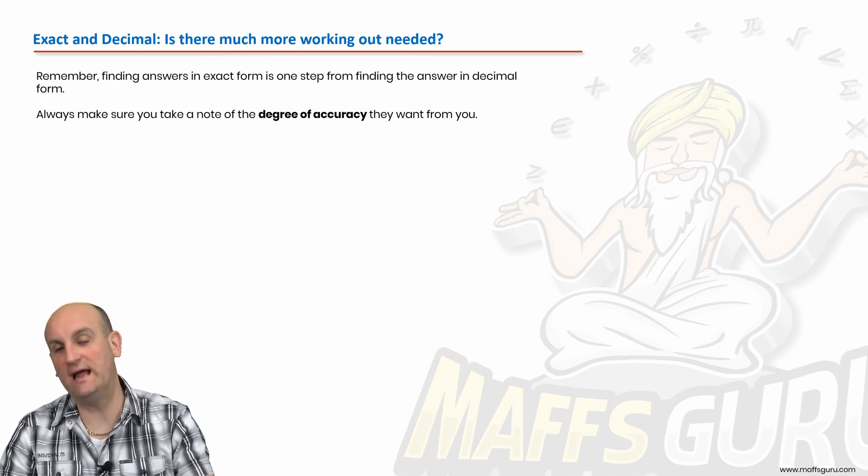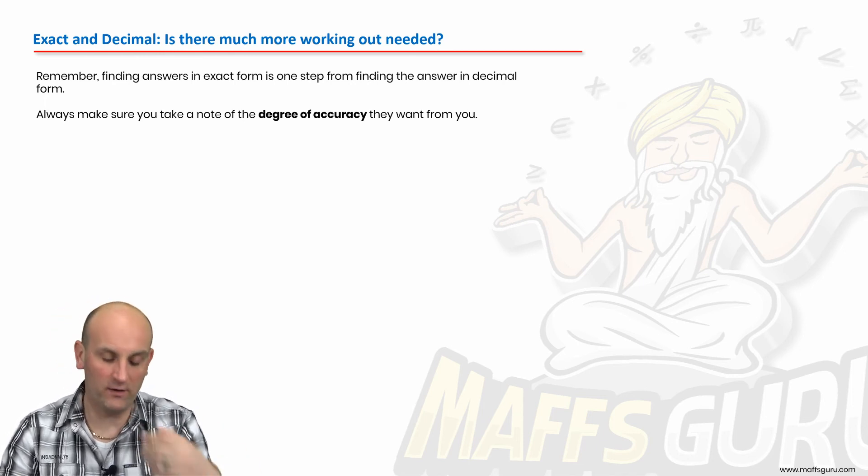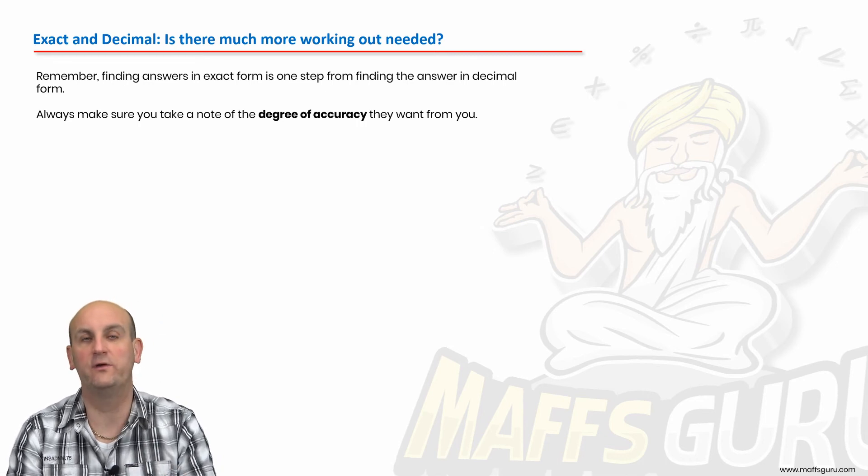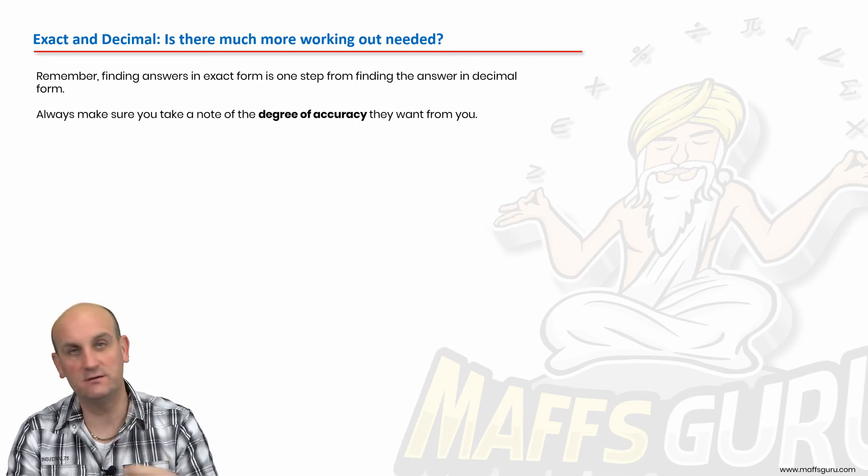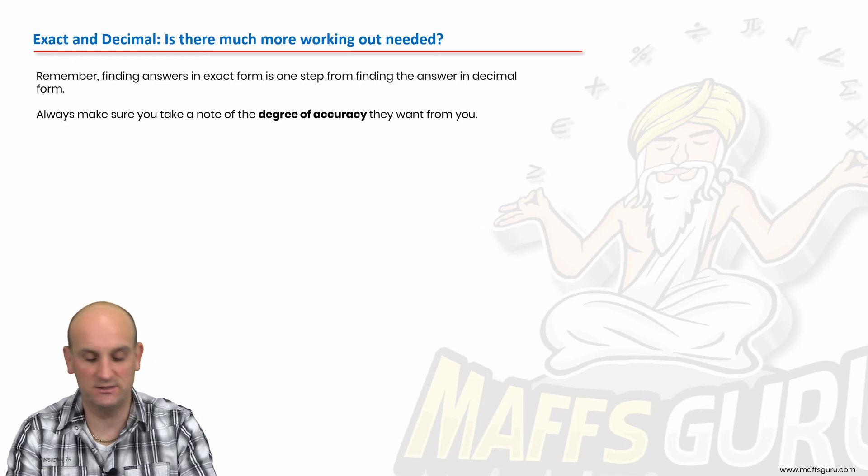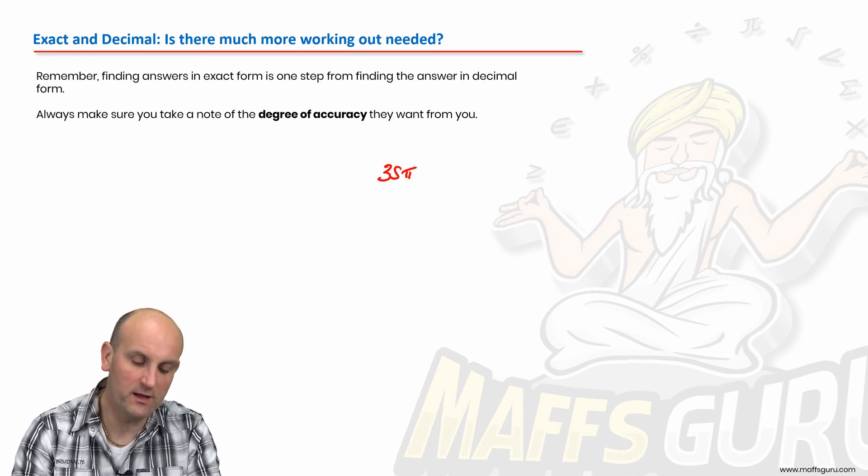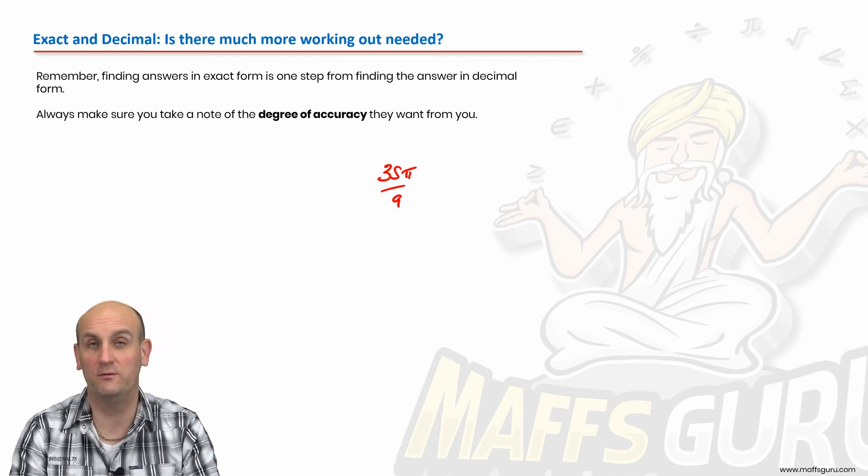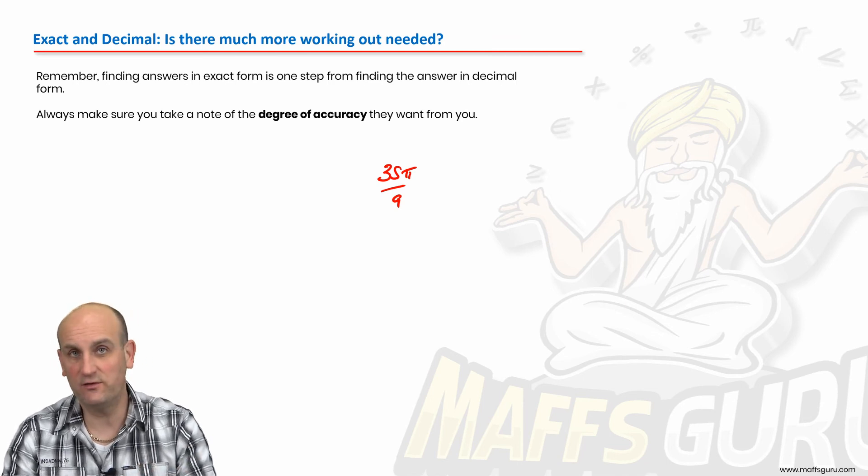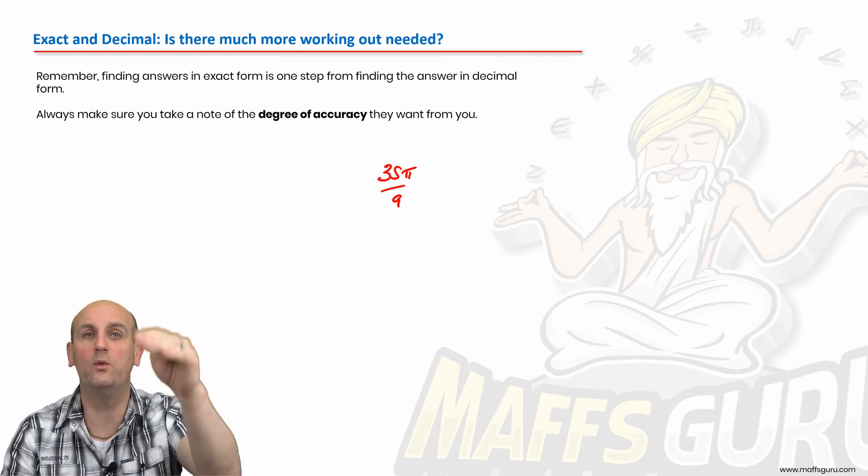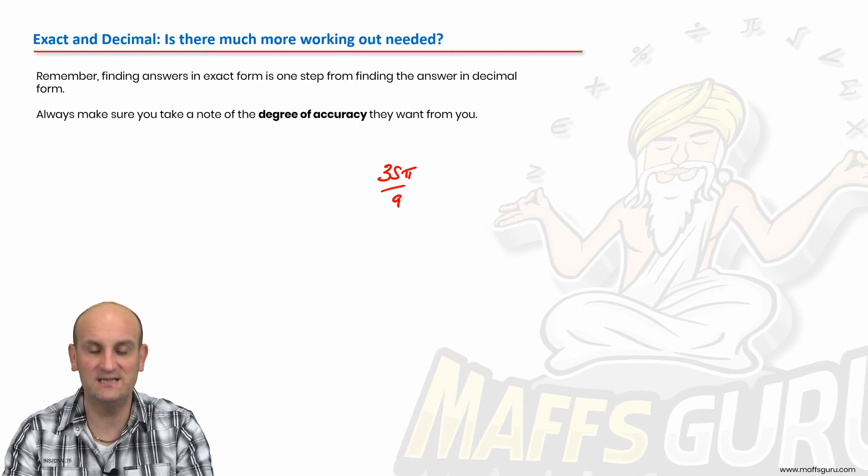Exact and decimal. Is there much more working out needed? As I said earlier in my thing, if I have already worked out my exact value somewhere in the question, it makes perfect sense to just leave it. If I have 35 pi on 9 as an answer partway through my working out, just leave it as 35 pi on 9. Get all the way to the end of the question.